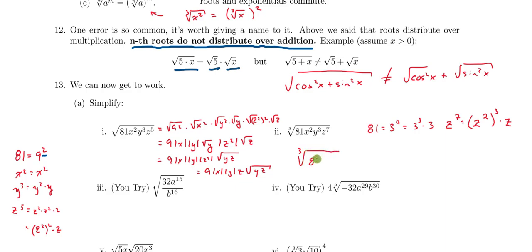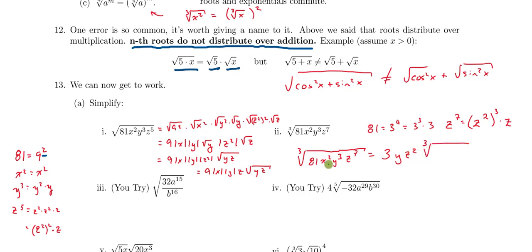So the cube root of 81x²y³z⁷ simplifies as follows: I have a perfect cube for the 3 cubed factor, which gives me a 3 out front. I can also pull out y, which was a perfect cube. So we get 3y, along with z squared. Inside the cube root I'm left with one factor of 3, two factors of x, and one factor of z. So there is our solution to Roman numeral two.